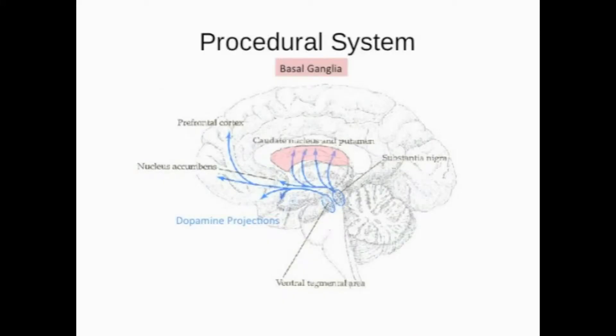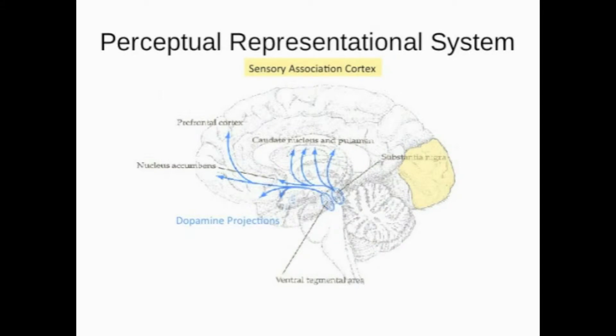Another important system is the procedural system, which mediates the performance and learning of motor skills — for example, learning to play a musical instrument. The procedural system depends heavily on the basal ganglia. A third important system is the perceptual representation memory system, which mediates the familiarity that we feel when we hear a song or see a picture more than one time. The perceptual representation system depends heavily on sensory association areas of cortex.